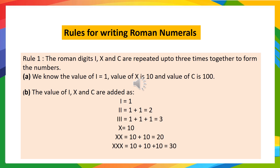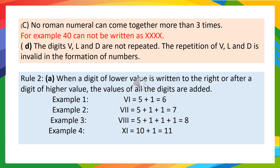I is for 1, X is for 10 and C is for 100. In part B, you can see how to add the value of I, X and C. In part C, no Roman numerals can come together more than three times. For example, 40 cannot be written as X, X, X, X, X.